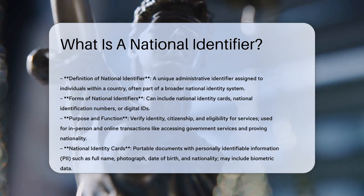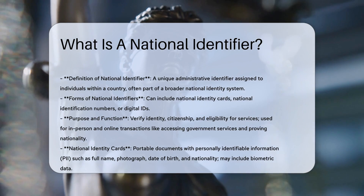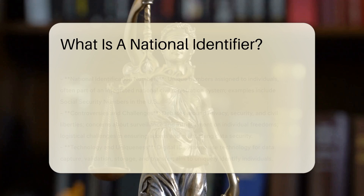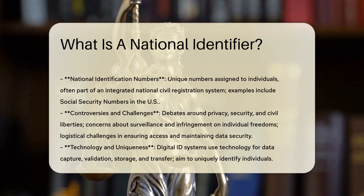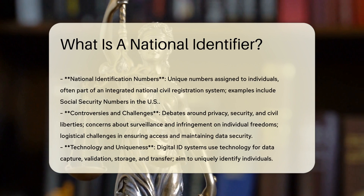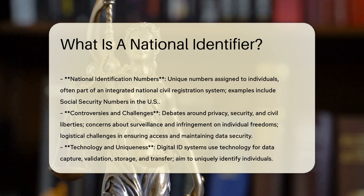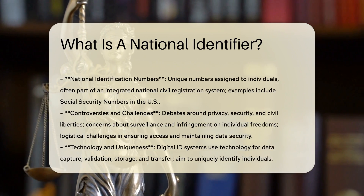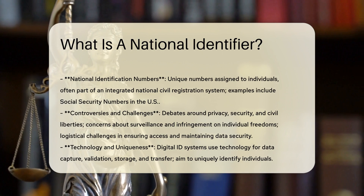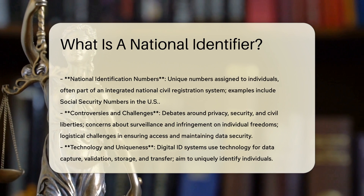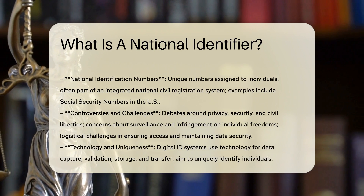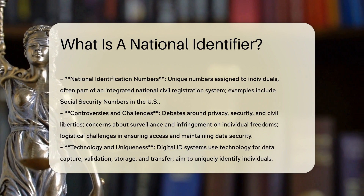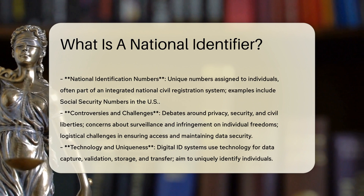Types of National Identifiers. 1. National Identity Cards: These are portable documents issued by a government containing personally identifiable information (PII), such as full name, photograph, date of birth, and nationality. They can also include biometric data like fingerprints.